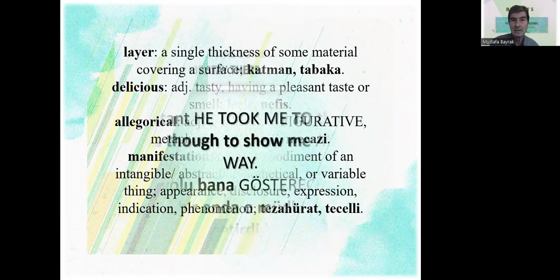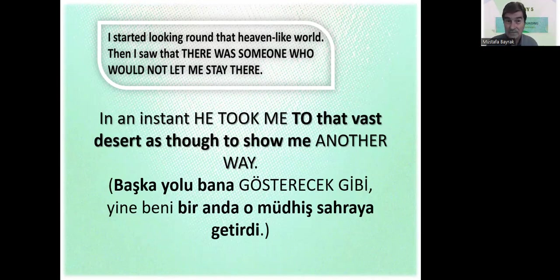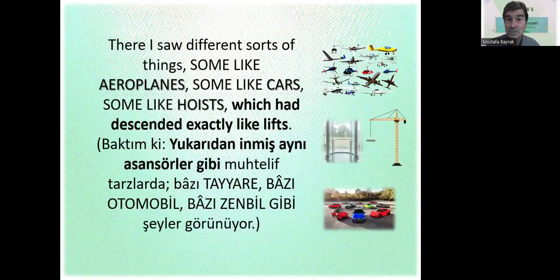As you know, our previous video ended with this page. I started looking around that heaven-like world, then I saw that there was someone who would not let me stay there, so I knew the third part of the journey would start. In an instant — all of a sudden — he took me to that west desert as though to show me another way, the third way. There I saw different sorts of things: some like airplanes, some like cars, some like hoists which had descended exactly like lifts.